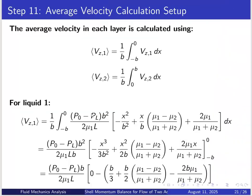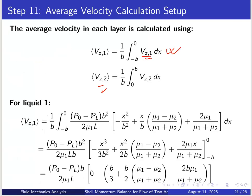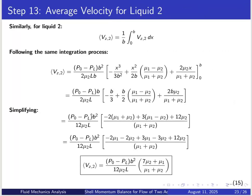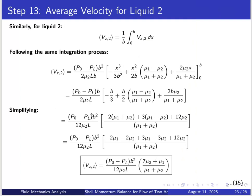The average velocity for each layer is calculated as: Vz1_avg equals (1/B)·integral from minus B to 0 of Vz1 dx, and Vz2_avg equals (1/B)·integral from 0 to B of Vz2 dx. After performing the integration, the results are: Vz1_avg equals [(P0 minus PL)·B²/(12 mu1 L)]·(7mu1 plus mu2)/(mu1 plus mu2), and Vz2_avg equals [(P0 minus PL)·B²/(12 mu2 L)]·(7mu2 plus mu1)/(mu1 plus mu2).